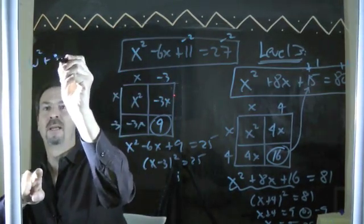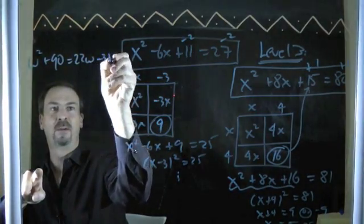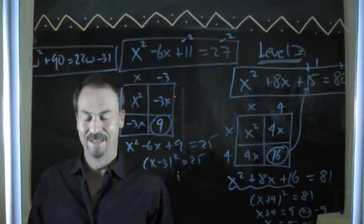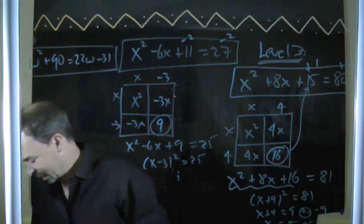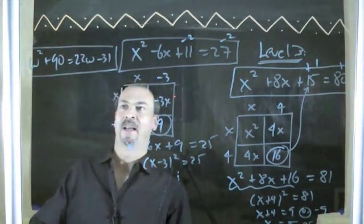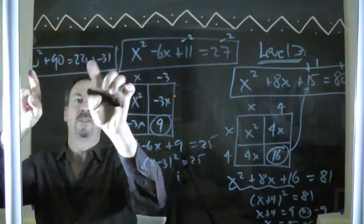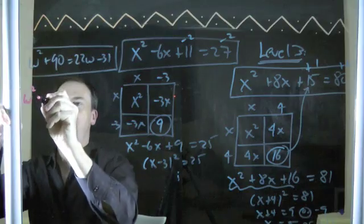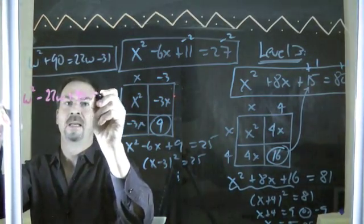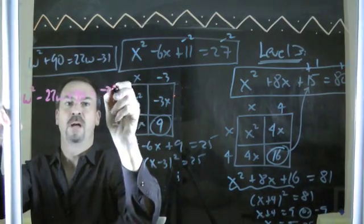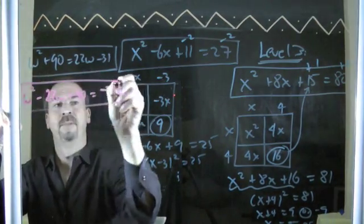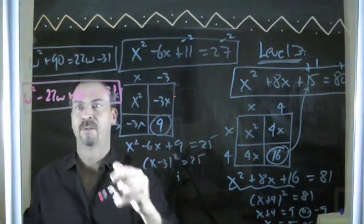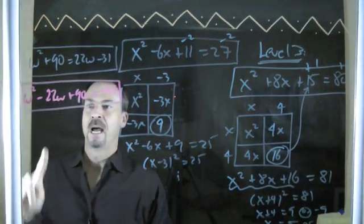Let me do another one. w squared plus 90 equals 22w minus 31. My board technique is getting bad. So let me just change colors to make it a bit clearer. I don't like having w's all over the place. Let me just bring this 22w over to the other side. So this is really w squared minus 22w plus 90 equals negative 31. I'm going to leave it like that. Most people probably want me to move the 90 over as well or something. I could. Whatever floats your boat. It's all good.